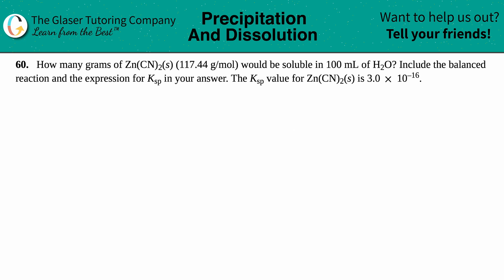Number 60: How many grams of zinc cyanide, Zn(CN)2 solid, with molar mass 117.4 grams per mole, would be soluble in 100 milliliters of water? Include the balanced reaction and the expression for Ksp in your answer. The Ksp value for Zn(CN)2 solid is 3.0 times 10 to the negative 16th.